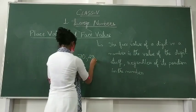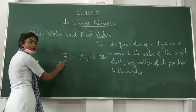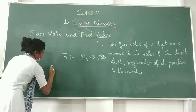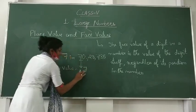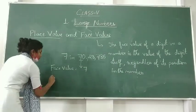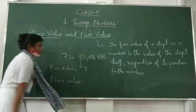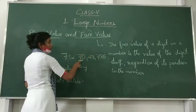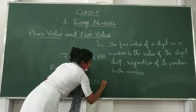Here I am writing the numbers. What is the face value of seven in seventy lakh twenty-three thousand seven hundred eighty-five? The face value will be the same number — seven. The face value is the same number; it does not matter in which place it is. Now, place value: seven is in the ten lakhs place, so you will write seventy lakhs.